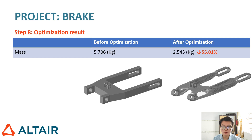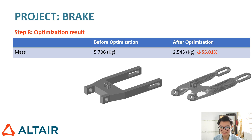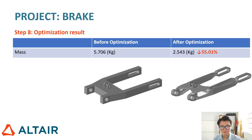To explain why this model reduced its weight so significantly — more than half — it is because our initial design was a solid model, which naturally weighs a lot. So after optimization, the weight reduction is very substantial.